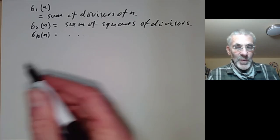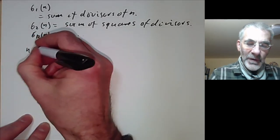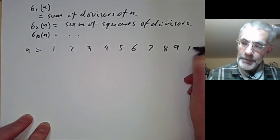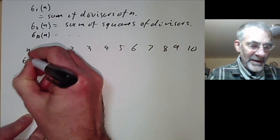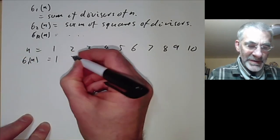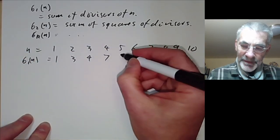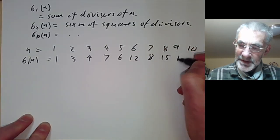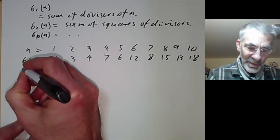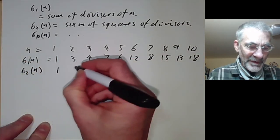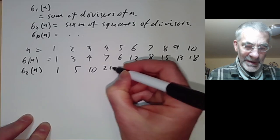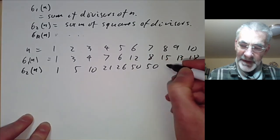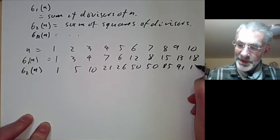Let's compute some values for n from 1 to 10. Sigma_1(n) goes: 1, 3, 4, 7, 6, 12, 8, 15, 13, 18. And sigma_2(n) goes: 1, 5, 10, 21, 26, 50, 50, 85, 91, 130.